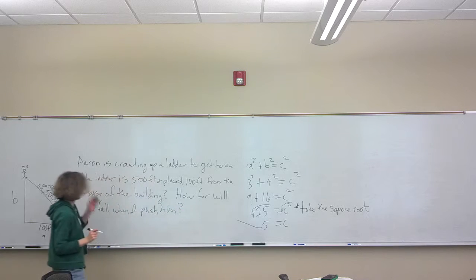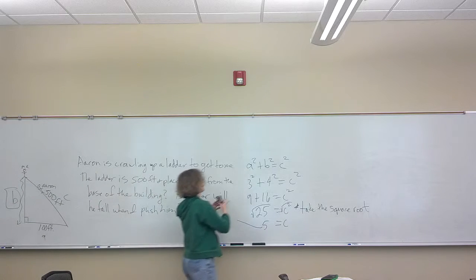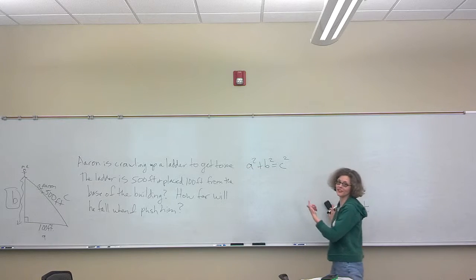Okay, this is a long word problem. We've got this building here. We're hoping that it's up 90 degrees to the ground. I'm at the top here in the air trying to get you to crawl up this ladder. It's 500 feet. It's placed 100 feet away from the base of the building. So how far is it going to fall when I push it? So we want to know how far is it going to go. That's side B.